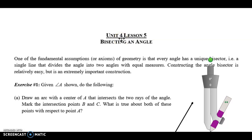Hi, G-O-H. This is Unit 4 Lesson 5, and today we're going to bisect an angle, which is probably my second favorite construction. My first one is perpendicular bisector, as I've already said. But bisecting an angle is pretty simple, and it's fun. So here we go.